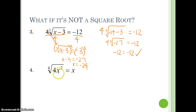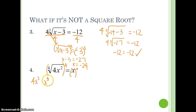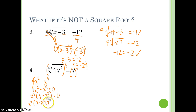For number 4, we have the 4th root of 4x squared equals x. We've already got our radical isolated, so we're just going to raise each side to the 4th — we're raising it to whatever root we have. So we get 4x squared equals x to the 4th. If we move our x to the 4th over, we have a GCF we can pull out, which is x squared. So we end up with x squared times 4 minus x squared equals 0. We can use difference of squares: x squared times 2 minus x times 2 plus x. Then we set each factor equal to 0 and get x equals 0, x equals 2, and x equals negative 2.